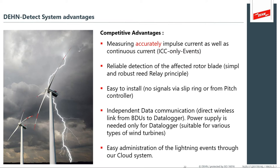The competitive advantages over other products are accuracy and the system's great capability capturing ICC events — especially ICC-only events. Here in the northern hemisphere, in North America and Europe, we're entering the winter months. Based on observational data from meteorological institutes, we expect more upward flash events and more ICC-only events in the winter months. In fact, 80% to 99% of lightning in winter is an upward event. Your wind turbine is a high asset, a tower, and so it's going to be attracting more lightning. The system is easy to install, gives you an independent data connection, and is easy to administer through our cloud system, so you can understand what's happening on your wind turbine systems.